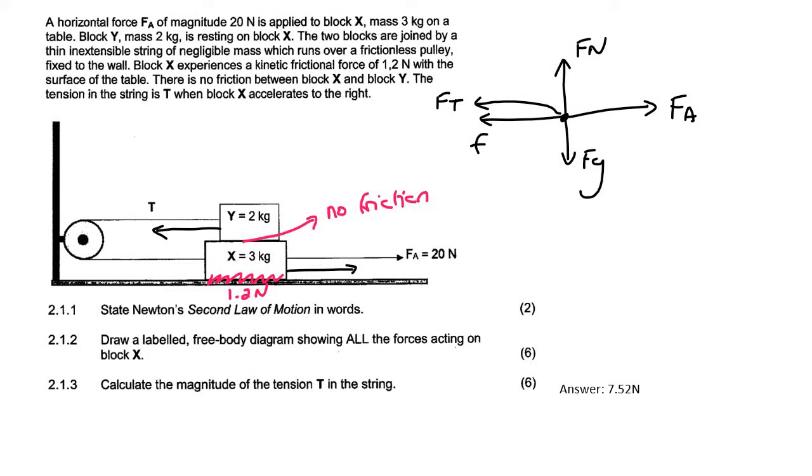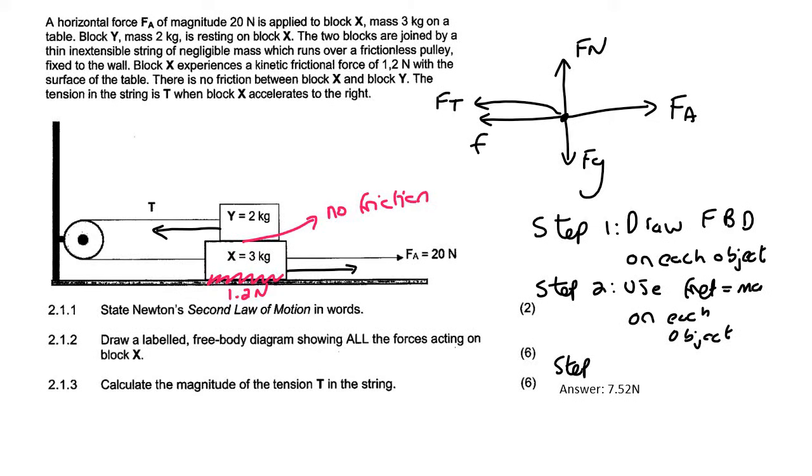Step one: we draw a free body diagram on each object. Step two: we use F net equals to ma on each object. And then step three: we solve, and normally this is going to be simultaneous.